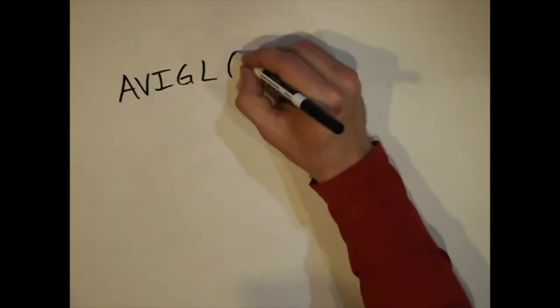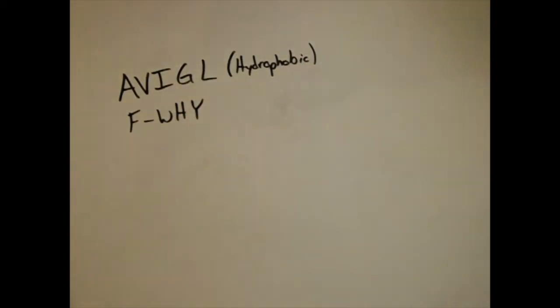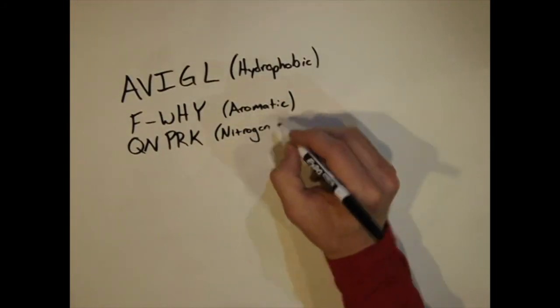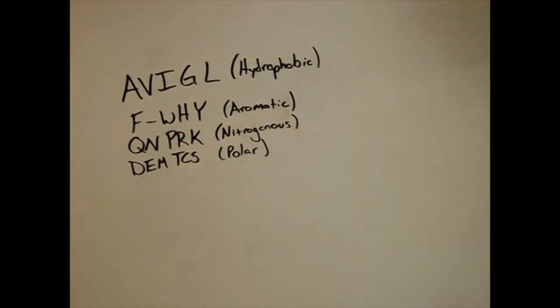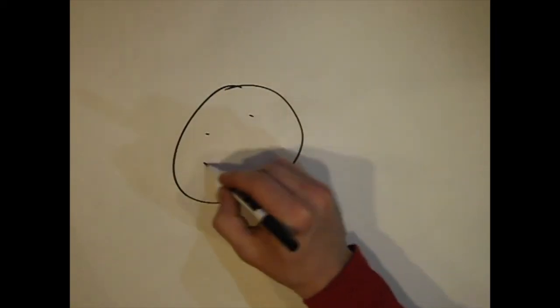So now let's review our four groups. First Avigil, hydrophobic. Fy, aromatic. Queen Prince K, nitrogenous. Demtacos, polar. We hope this video successfully helps you memorize the amino acids.